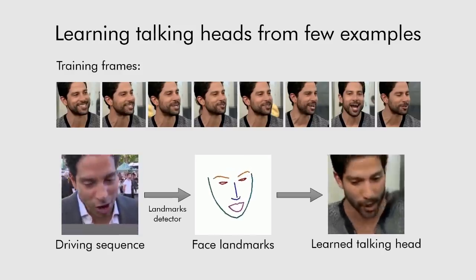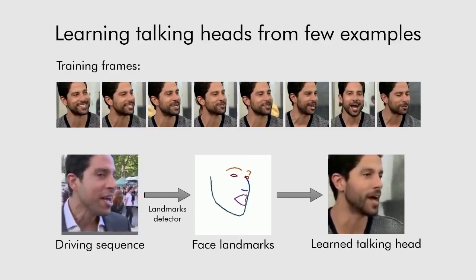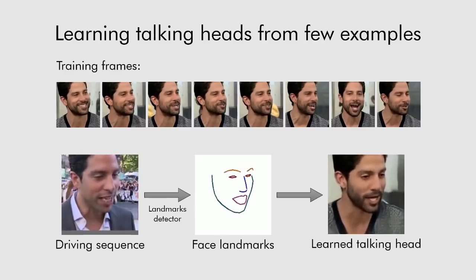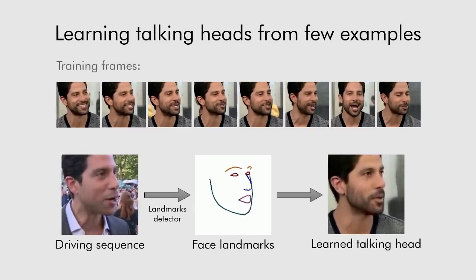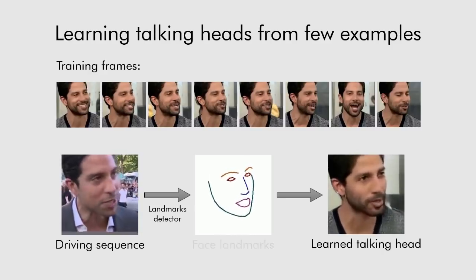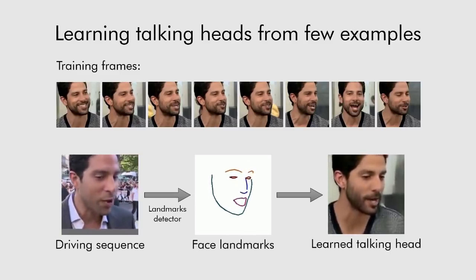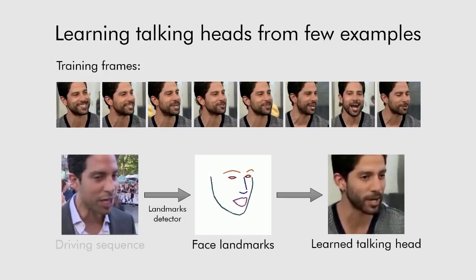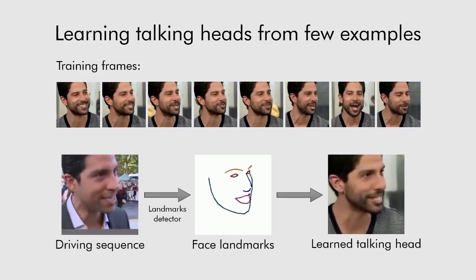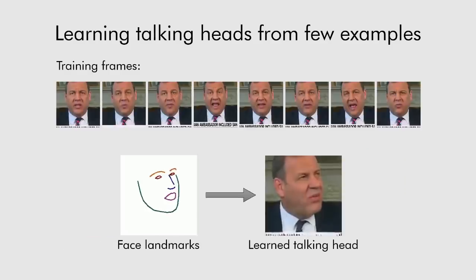We present a system that can learn realistic talking head models. Notably, learning of a new head model requires just a handful of images. In this example, the model was learned from eight frames. Once a talking head model is learned, it can be driven by the positions of face landmarks. In this case, we extract landmarks by running an off-the-shelf face landmark tracker on a different video of the same person. Effectively, the learned model serves as a realistic avatar of a person. Our talking head models work well even for new view angles not present in the training examples.